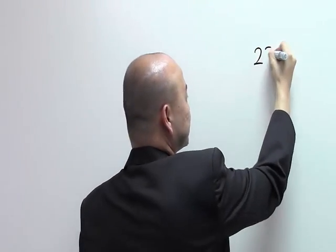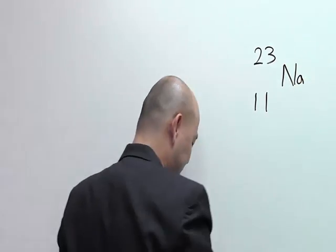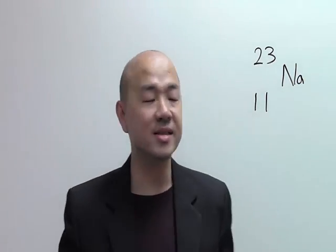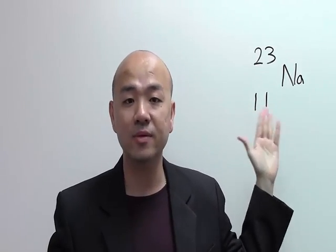In an example, you'll usually be given a symbol like this: 23 over 11, Na. It's important that you understand what each and every part of the symbol represents.